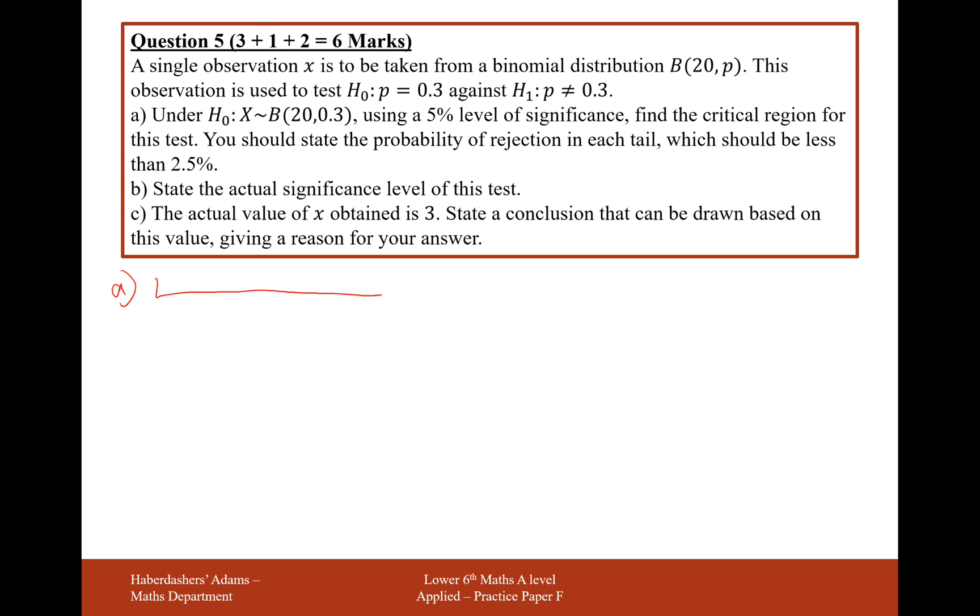Let's think of a probability scale here where we have 0% down the bottom and 100% at the top. Now what we want here, let's put markers at 2.5% and 97.5%. What we're looking for here is the values on the outcomes of heads where the probability of that happening, or the probability up to that event happening, is going to be less than 2.5%, so 0.025.